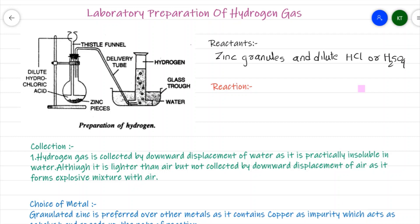We arrange the apparatus as shown in the diagram. We have a round bottom flask where we keep zinc granules, then a two-hole cork with a thistle funnel and a delivery tube attached. One end of the delivery tube is kept in a water-filled jar, and from the thistle funnel we pour dilute hydrochloric or dilute sulfuric acid.